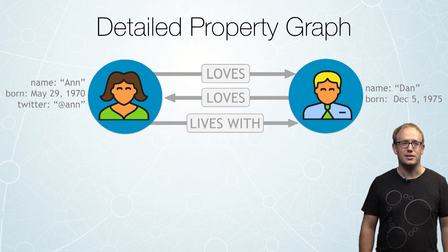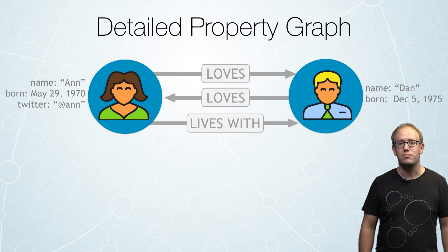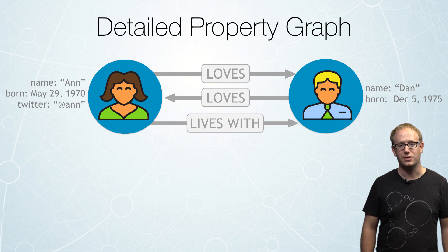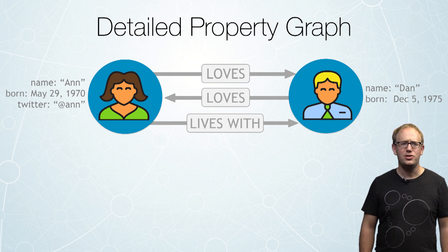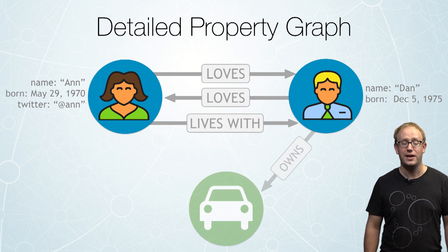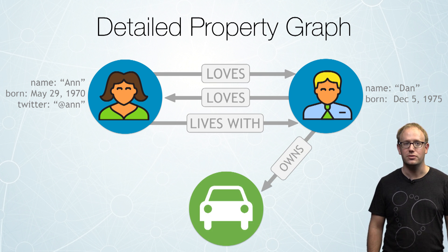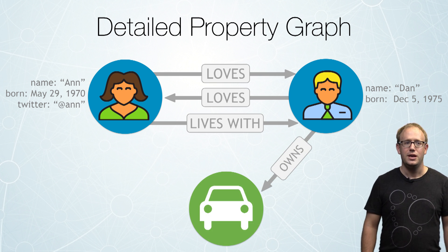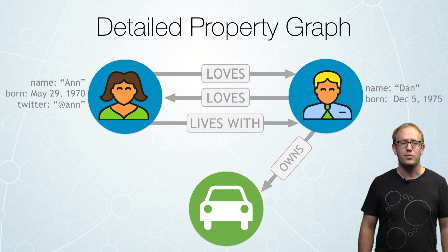You can see we have a third property on Ann, which is her Twitter handle. This property only exists on Ann and that's fine — you can have a property existing on just a single node. Now let's show you how we add an additional relationship and an additional node. In this case, we want to represent that Dan owns this car.